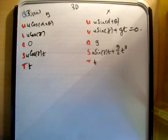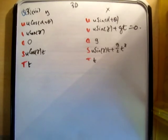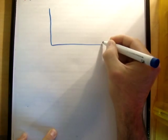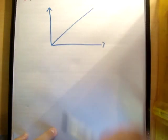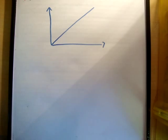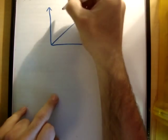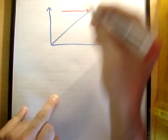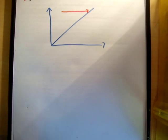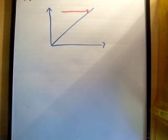The question states: prove that the particle will strike the plane horizontally, and we're given an expression in relation to tan theta. If I draw my xy plane and my incline — usually we draw our x prime and y prime axes and solve it in terms of what's happening on the incline. But the question says the particle will strike the plane horizontally, meaning it's parallel to the x-axis. So, how do we get a condition relating to the x-axis if we're using the incline?